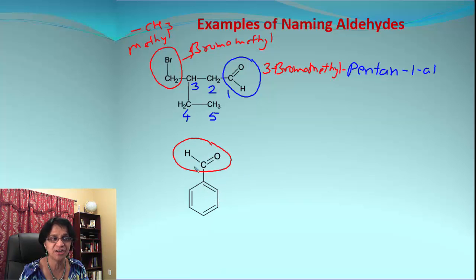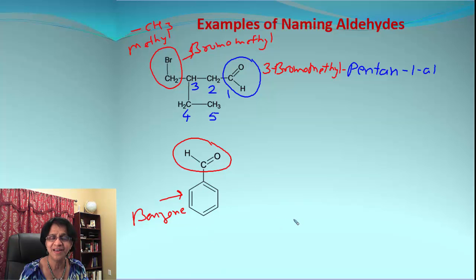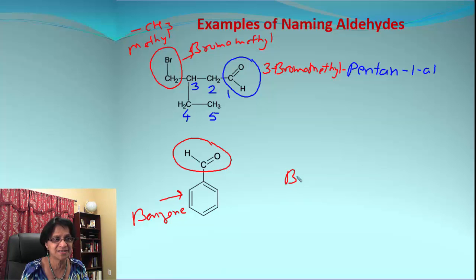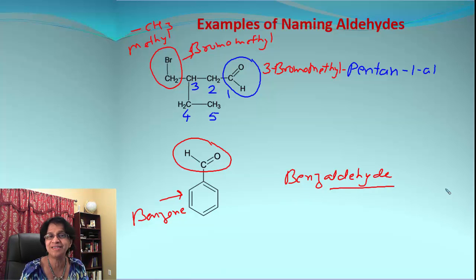Here we have the aldehyde group CHO attached to an aromatic ring — benzene. The simplest way to name that is benzaldehyde. We just call it an aldehyde with a benzene ring.